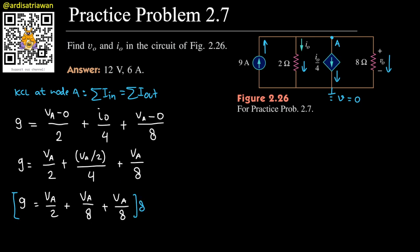Multiplying both sides by 8, we can get 72 on the right hand side. And then this will be 4va plus va plus va. Therefore, I will have 6va is equal to 72, or va is equal to 12 volts, which is a very good result. And we can calculate the other variables from this one.